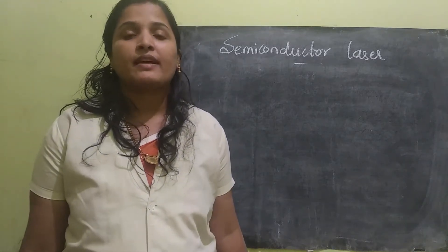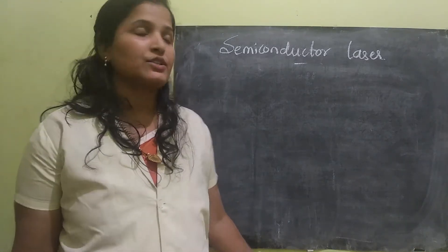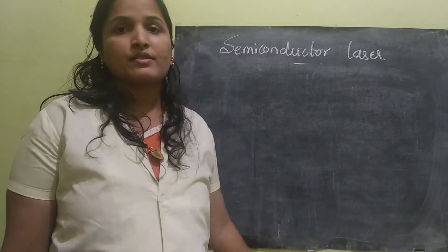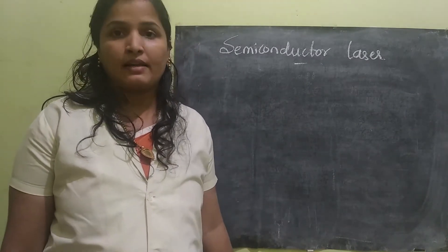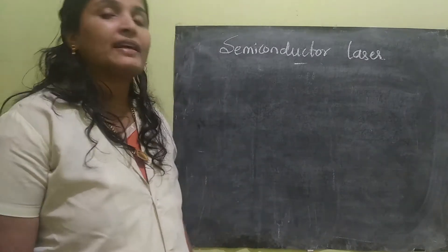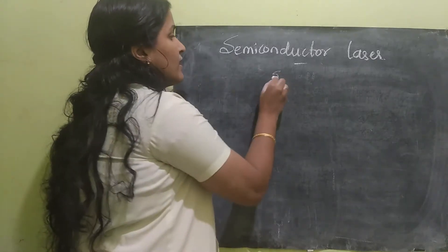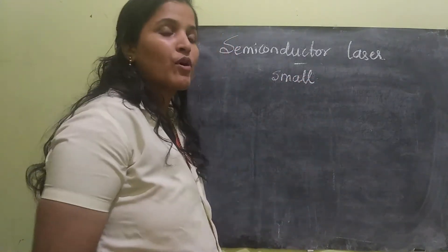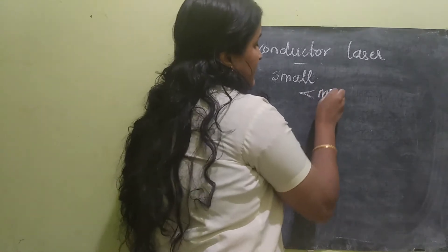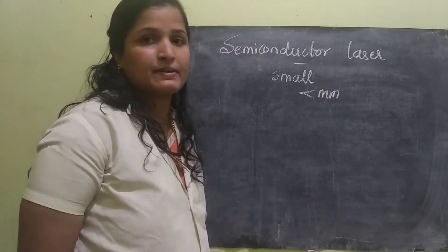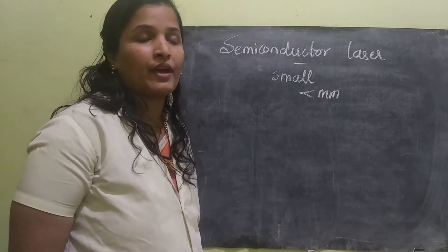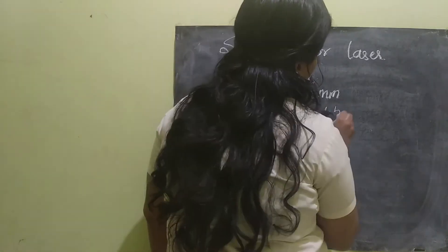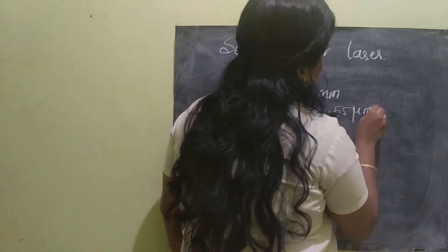Good morning students. Today I am going to teach you semiconductor laser, which is the last type of laser. Semiconductor laser is a very small laser. The device is very small — it will be very, very, very less than millimeters. And it can operate in the range of 1.6 to 55 micrometers.